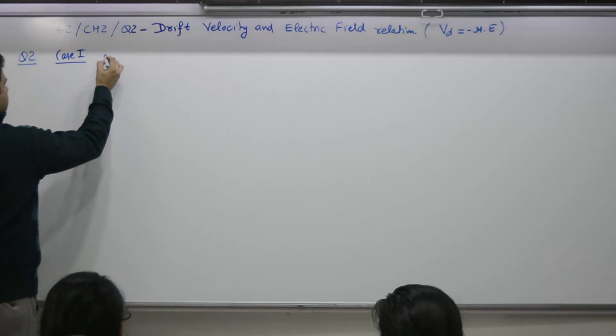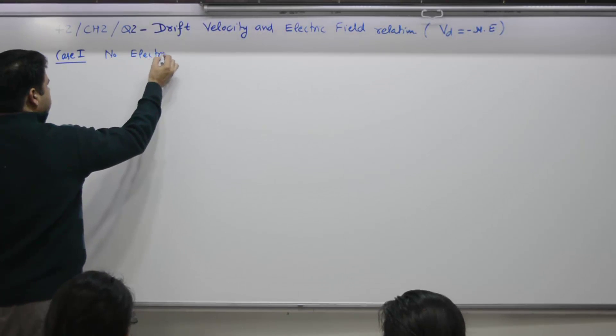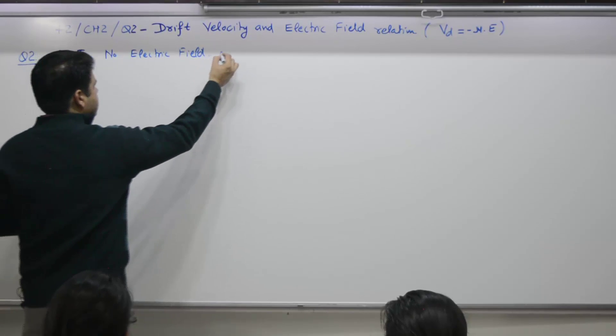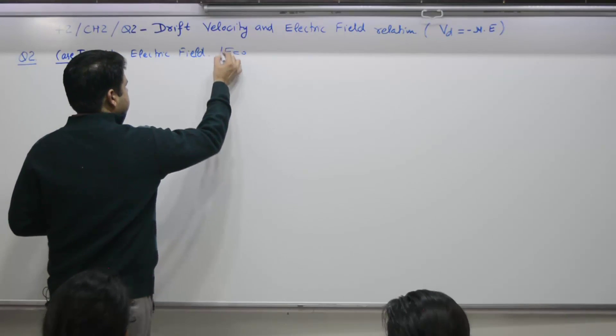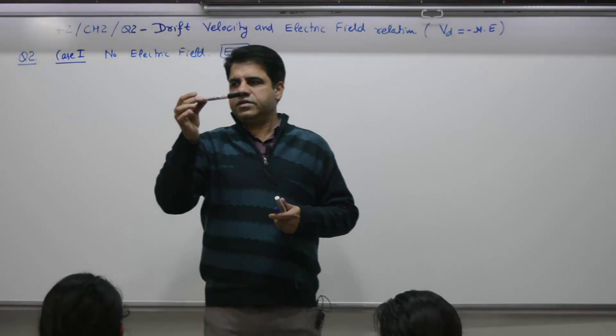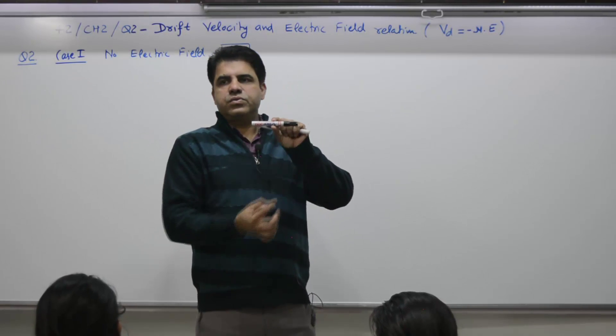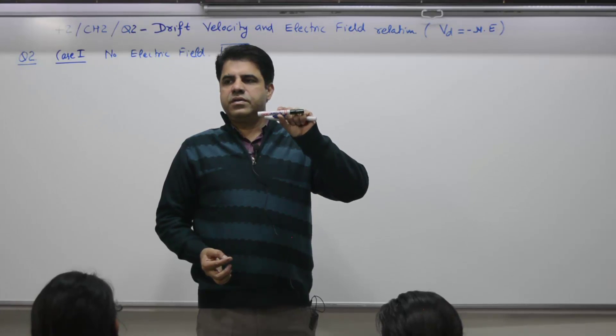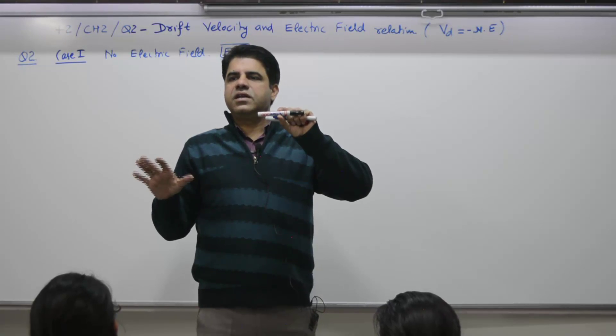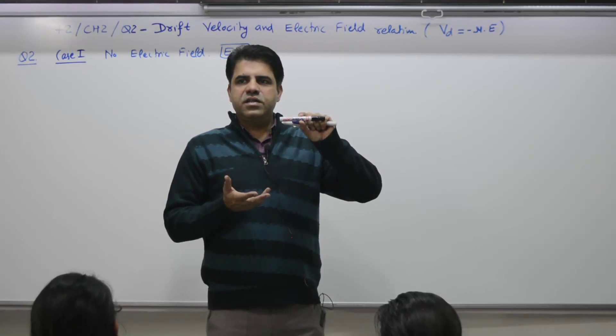Case number one: no electric field, external electric field is zero. If we have a simple wire and there is no battery connected across it, current flowing is zero. But what about electron movement?